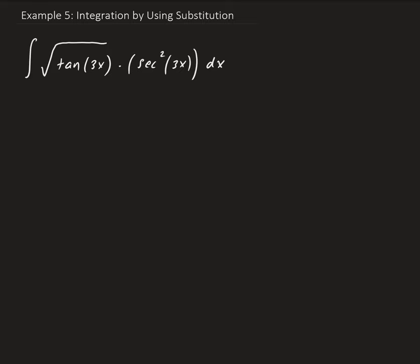We're going to do this by using the substitution method for integration. What we want to do here is let u be tangent 3x, because when we take the derivative of tangent x, we get a form of secant squared x. So for u, we have tangent of 3x.